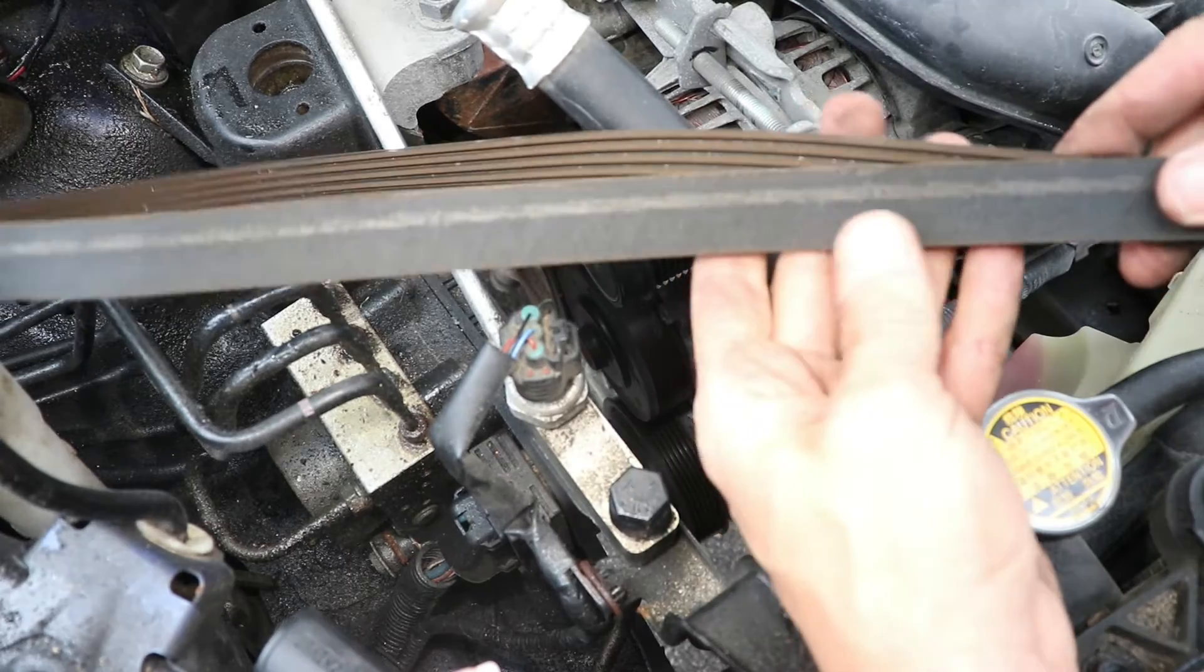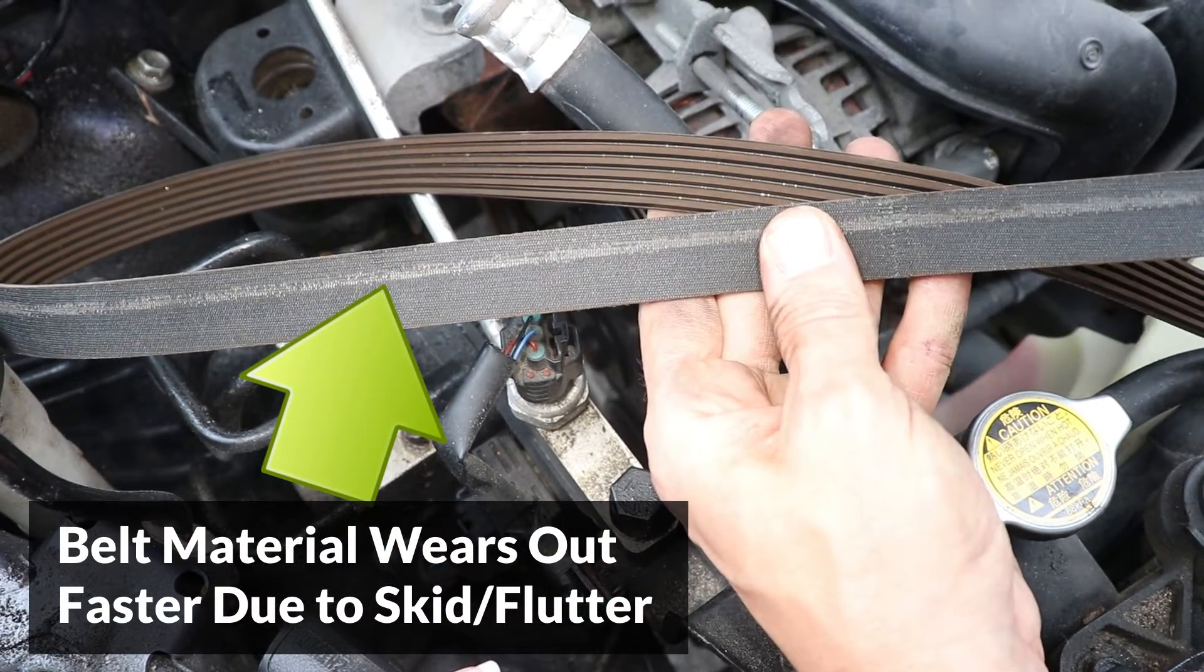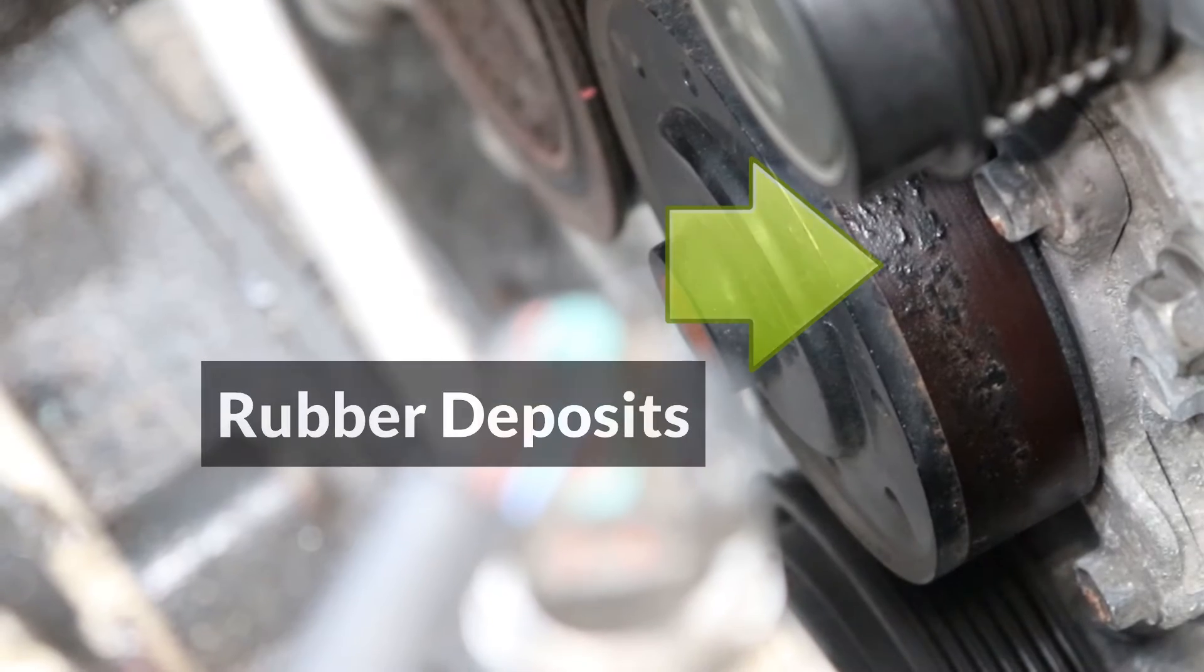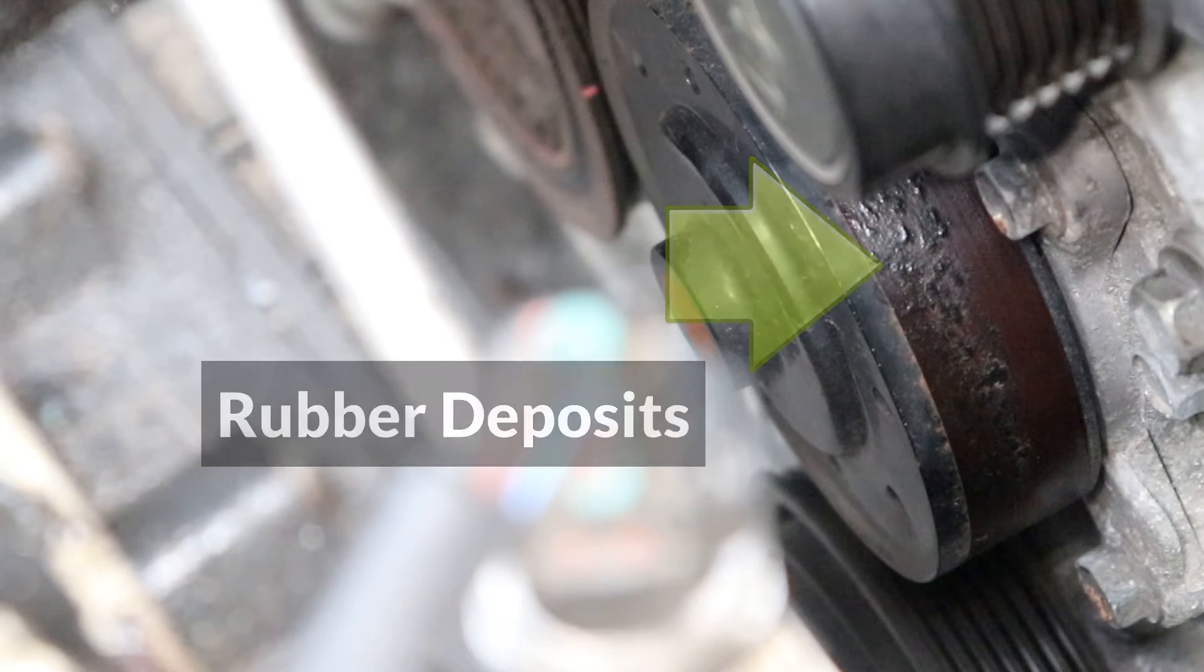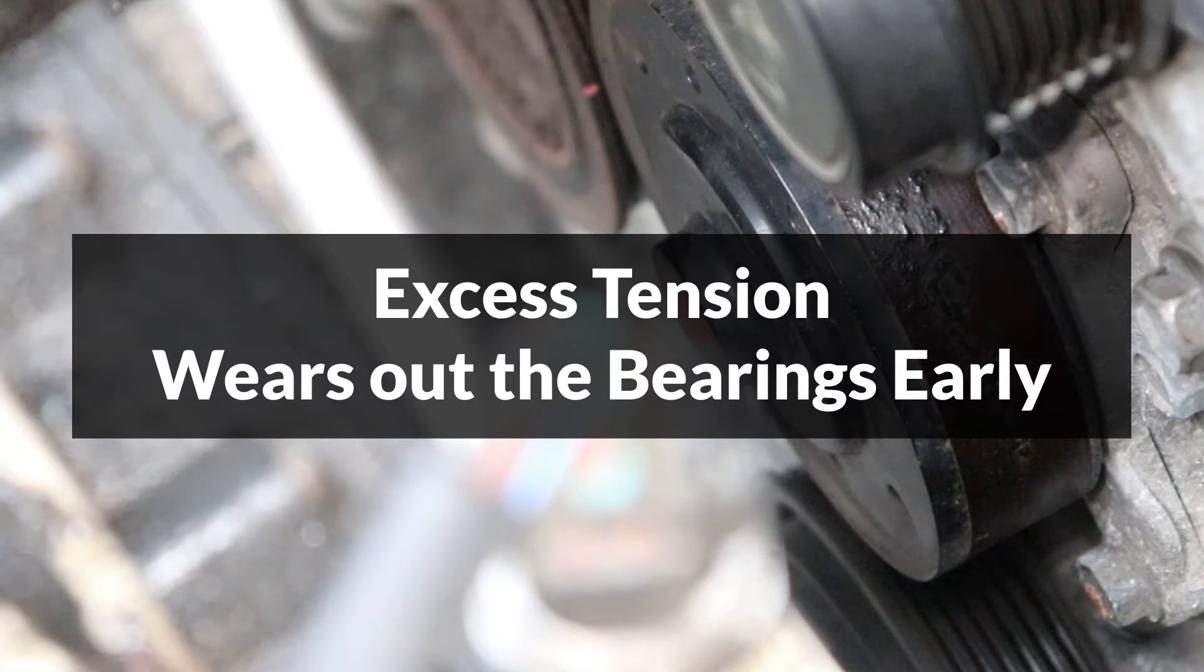If the belt is not tensioned enough, it will cause the material to wear out due to skidding and fluttering, and the rubber will deposit on the pulleys. On the other hand, excess tension can wear out the bearings early, and replacing them would be very costly.